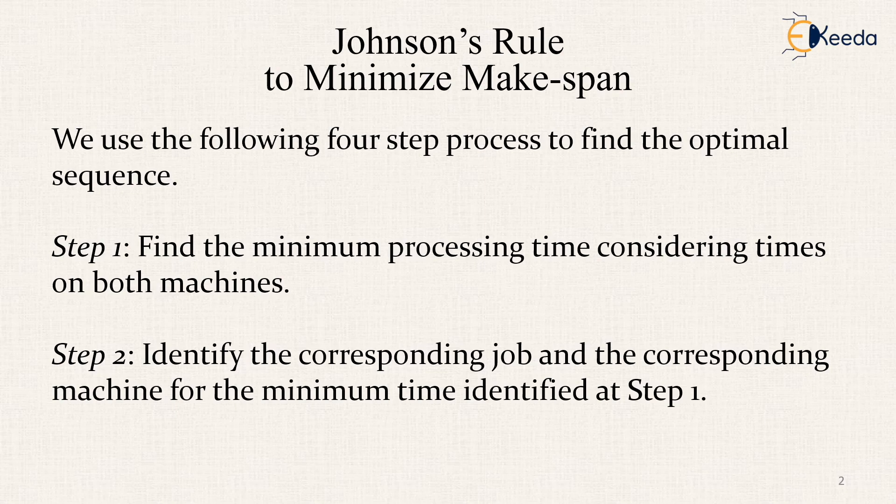Following four steps process are used to find the optimal sequence. That is step 1: we first find the minimum processing time considering the times on both machines. We identify the corresponding jobs and the corresponding machines for the minimum time identified at step 2.